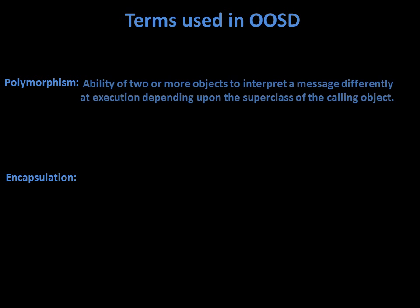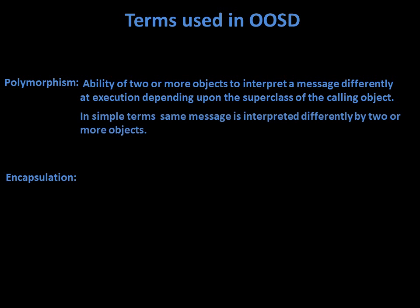These are the terms used in OOSD. For the SISA exam, you need to remember only these two terms and your job is done. What is polymorphism? It is the ability of two or more objects to interpret a message differently. In simple terms, the same message is interpreted differently by two or more objects.